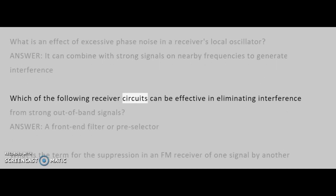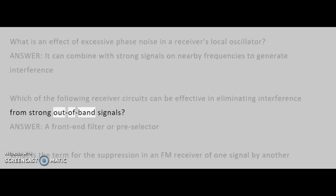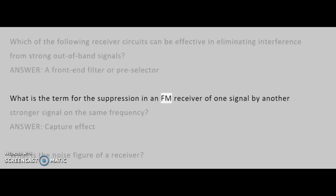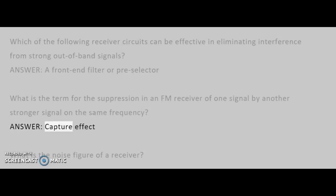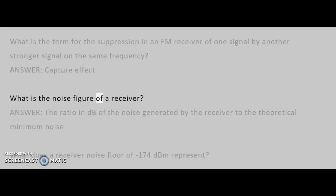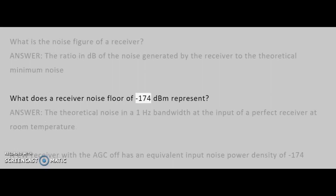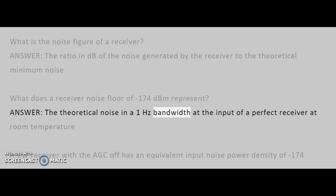Which of the following receiver circuits can be effective in eliminating interference from strong out-of-band signals? Answer: A front-end filter or pre-selector. What is the term for the suppression in an FM receiver of one signal by another stronger signal on the same frequency? Answer: Capture effect. What is the noise figure of a receiver? Answer: The ratio in dB of the noise generated by the receiver to the theoretical minimum noise. What does a receiver noise floor of minus 174 dBm represent? Answer: The theoretical noise in a 1 Hz bandwidth at the input of a perfect receiver at room temperature.